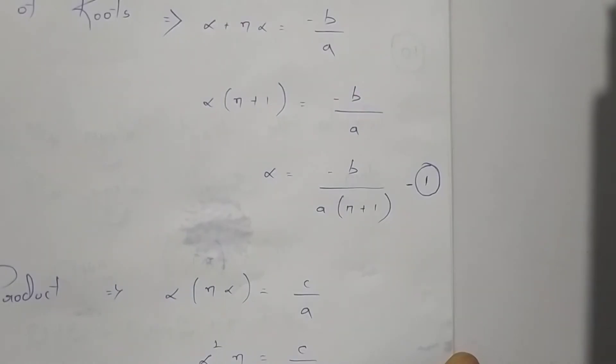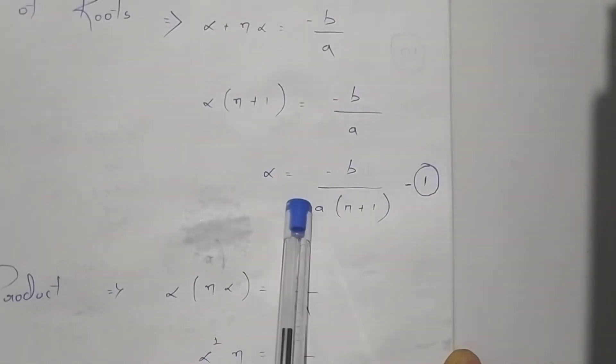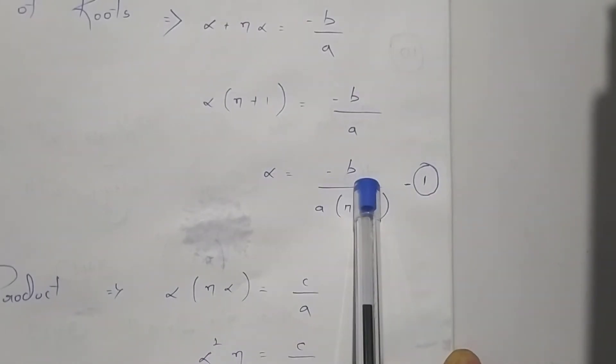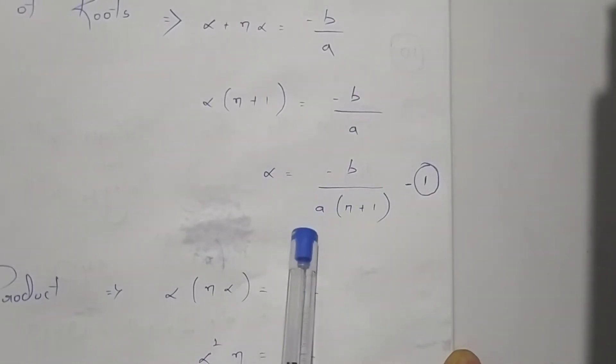From the sum of roots we got the value of alpha as -b divided by a(n + 1).